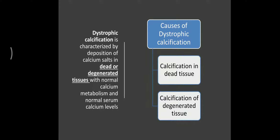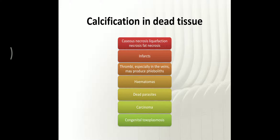Causes of dystrophic calcification include calcification in dead tissue and calcification in degenerated tissue. In the case of caseous necrosis, whenever there is formation of a granuloma with giant cells, there is deposition of calcium over those dead cells, giving a cheese-like appearance.